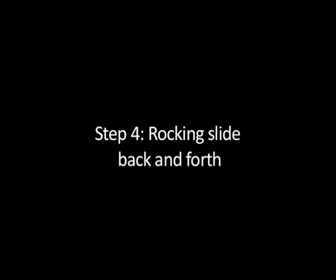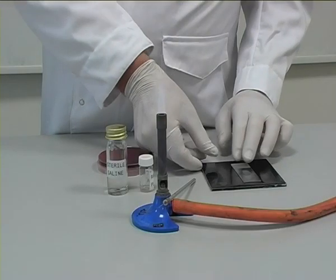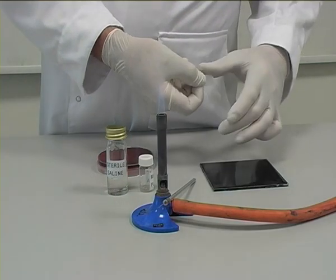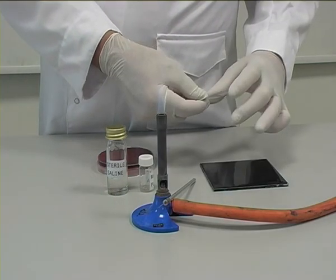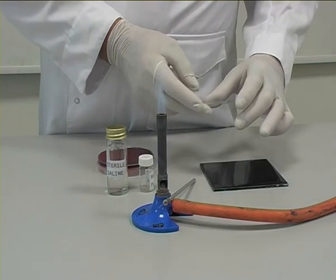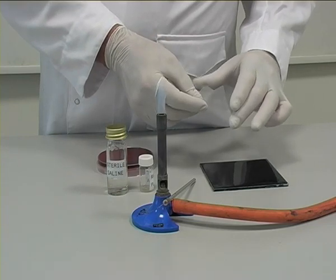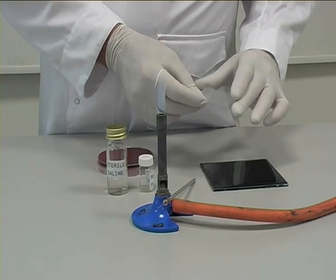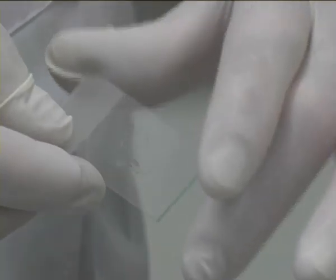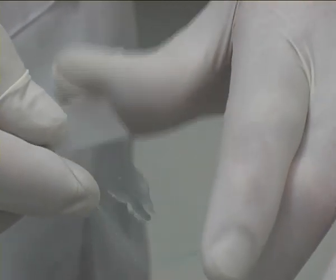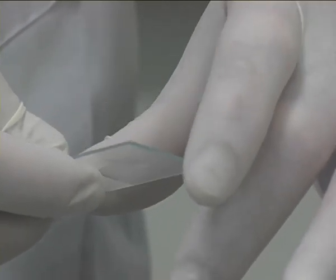Step 4: Rocking the slide back and forth. The slide is then carefully picked up and gently rocked back and forth. If tiny white granules are seen to form, then the organism is coagulase positive. Here, a large white clump is visible; thus, this organism is coagulase positive.